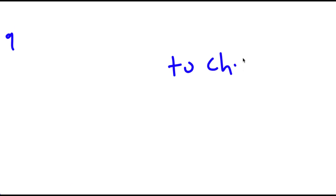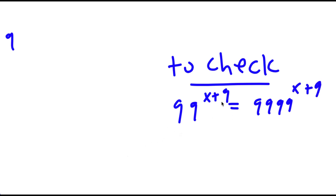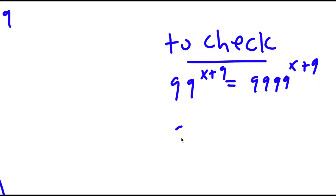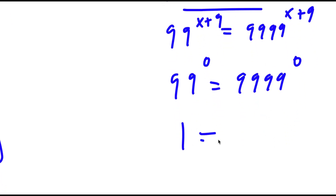To check: I have 99 to the power of x plus 9 equal to 9,999 to the power of x plus 9. We know x is negative 9, so I have 99 to the power of 0 equal to 9,999 to the power of 0. Anything to the power of 0 is 1, so I have 1 equals 1. This is correct, so my solution is right.